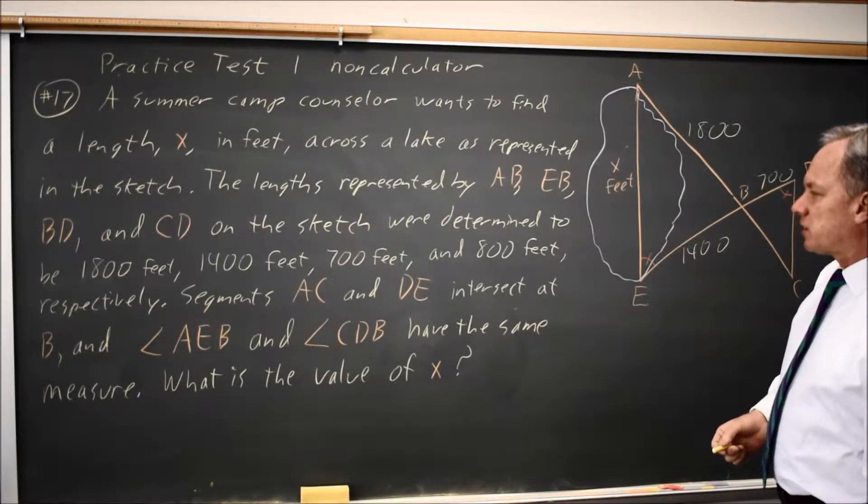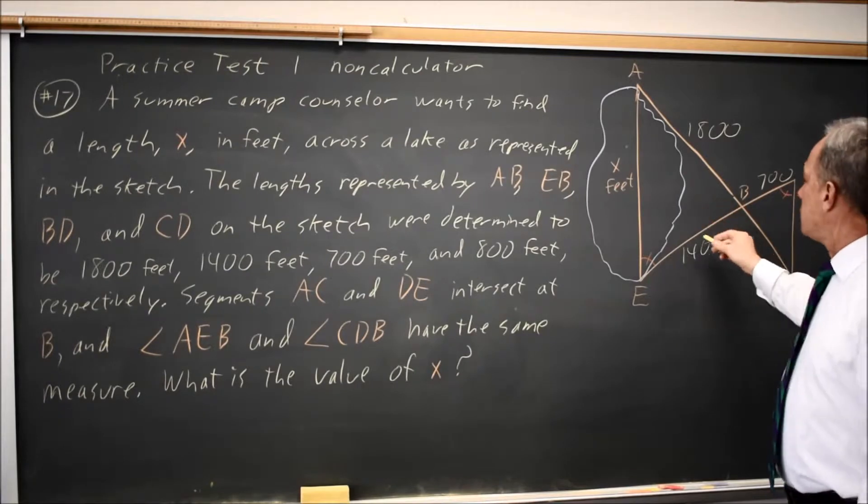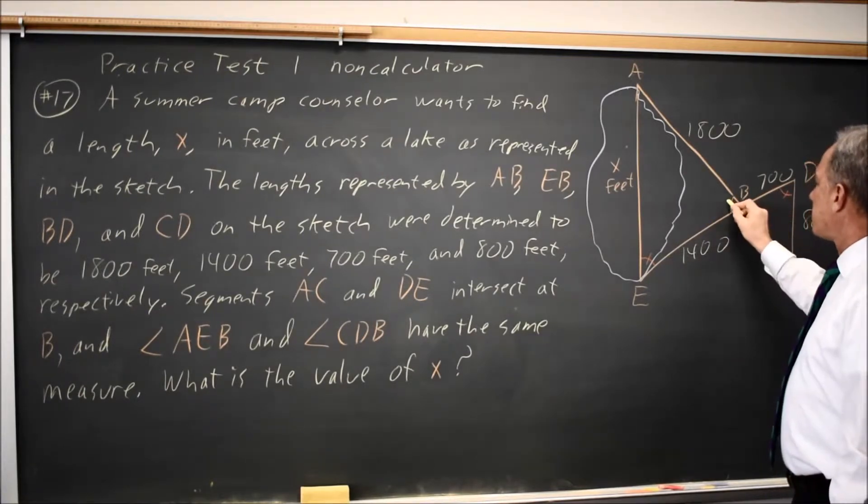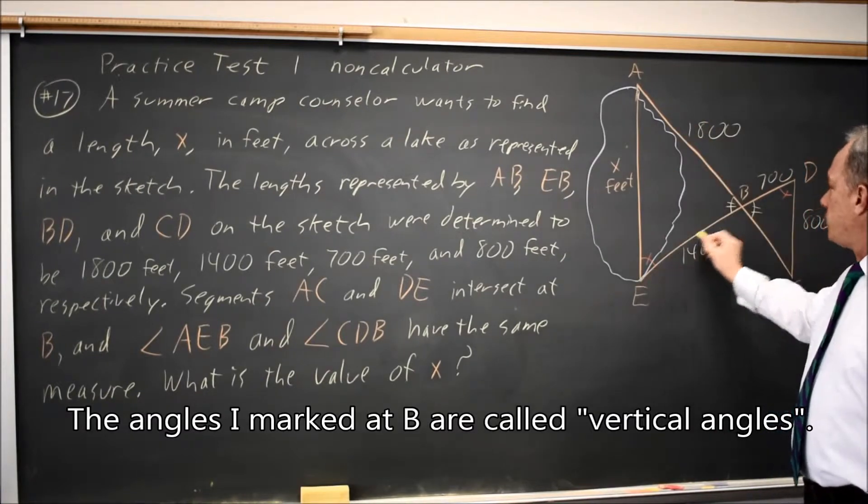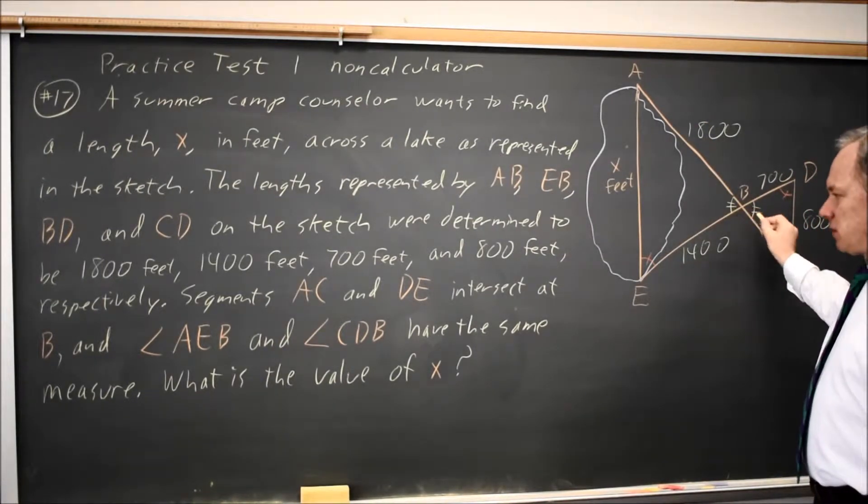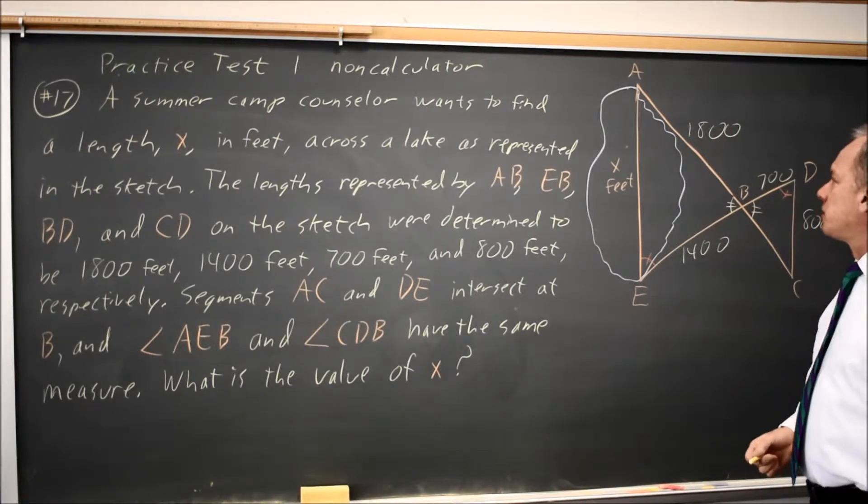You're also told that AC and DE intersect at B, which means these angles are equal. And you're told angle AEB equals CDB. So these two angles are equal, which means we have similar triangles.